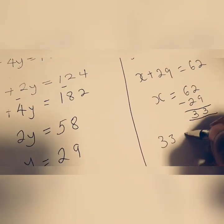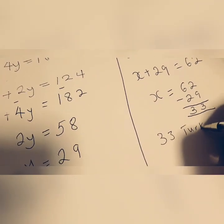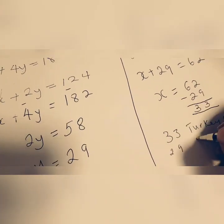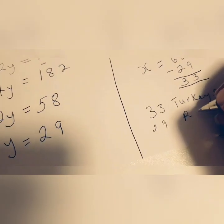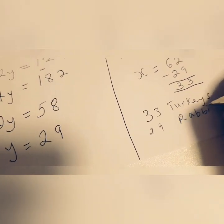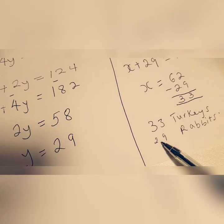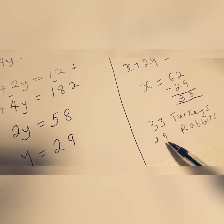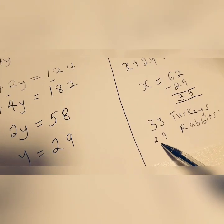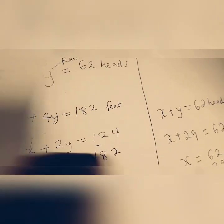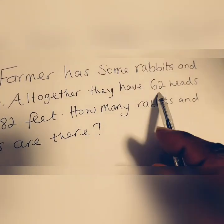So we have 33 turkeys and we have 29 rabbits and if you check that, if we have 33 turkey heads and 29 rabbit heads, if you add that together, you would get 62 altogether, which was what the equation was, 62 heads.